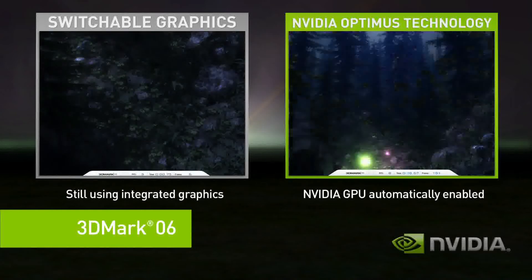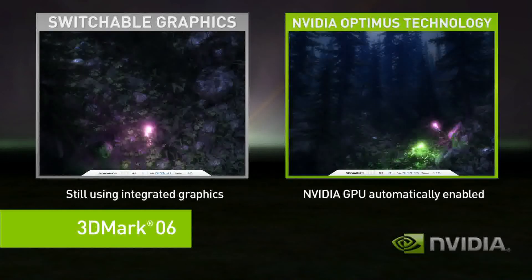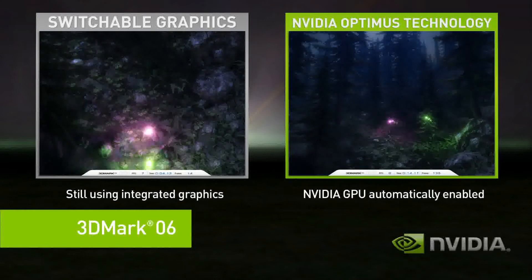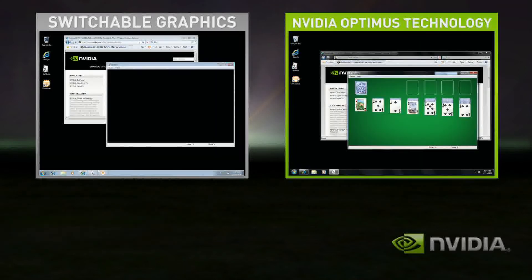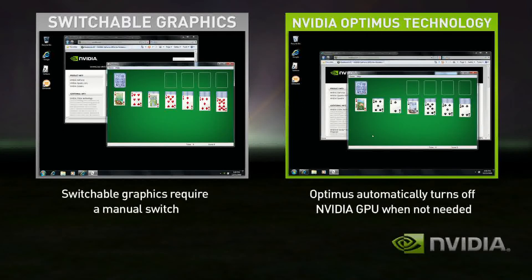The performance difference between the two is easy to see. Even better with Optimus, when you go back to your basic applications, the discrete GPU automatically turns itself off and you get great battery life.